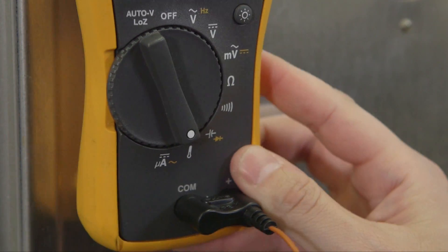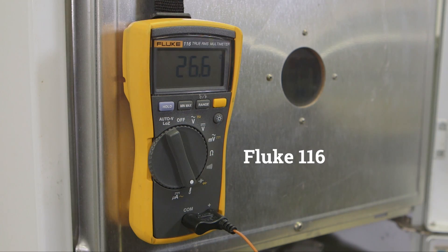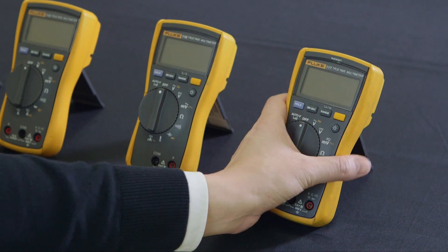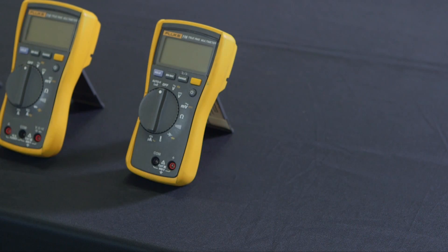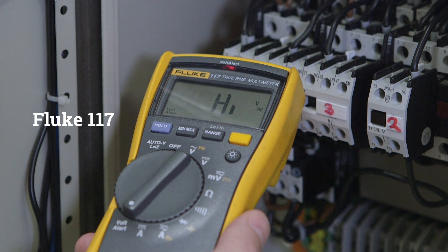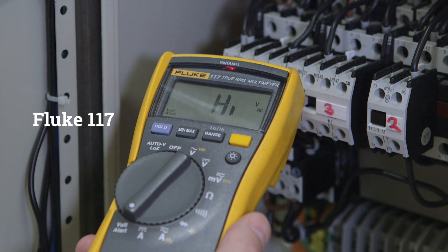This meter has a microamps feature to detect problems with flame sensors and also offers a built-in thermometer. The Fluke 117 has a non-contact voltage detector so you can get the job done faster.